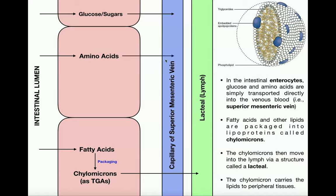These molecules ultimately move into the capillary beds and then into the venous system — specifically the capillary of the superior mesenteric vein, which drains the contents of the small intestine. From there, the superior mesenteric vein dumps into the hepatic portal vein, taking the amino acids and sugars directly to the liver. So glucose, sugars, and amino acids have a direct transit to the liver through the superior mesenteric vein, then to the hepatic portal vein, and then to the liver.